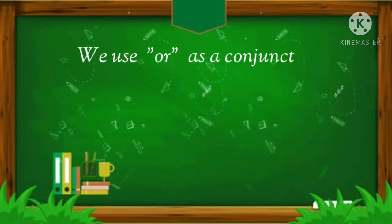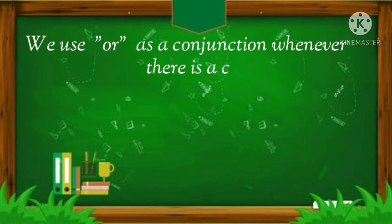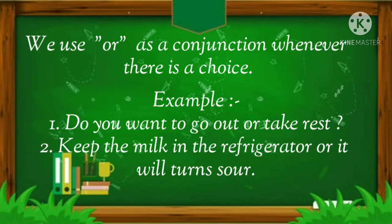We use 'or' as a conjunction whenever there is a choice. For example: Do you want to go out or take rest? Second example: Keep the milk in the refrigerator or it will turn sour.